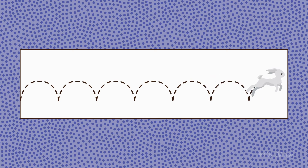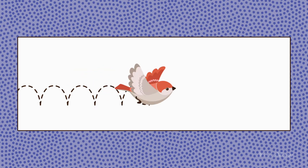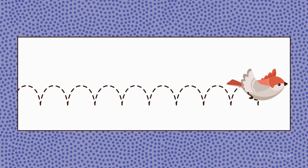In nature, motions are rarely straight, but instead follow a circular path or arc shape. When we apply this principle to our animations, objects and characters will move in a more organic way.